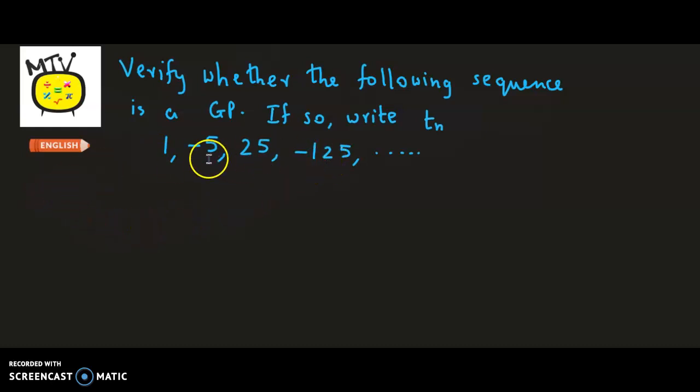Now let's verify the ratio between these terms. We consider the first ratio T2 by T1, that is the second term divided by the first term. The ratio we obtain is -5 by 1, which equals -5.